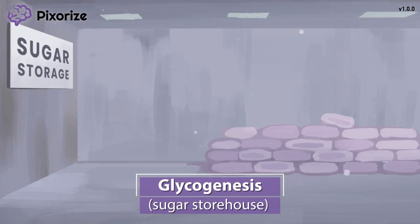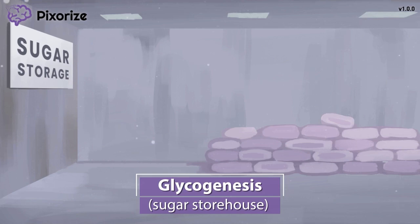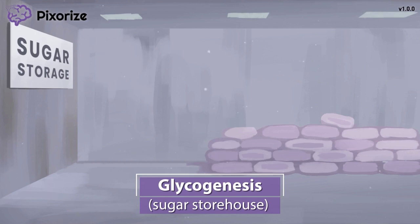To better understand the naming, let's start by dissecting the word glycogen. The prefix "glyco" refers to glucose, because glycose is just an old name for glucose, and the suffix "gen" refers to something that generates. Putting this together, glycogen then literally means something that generates glycose. This should make sense, because glycogen is the storage form of glucose, and we can obviously generate glucose from its storage form.